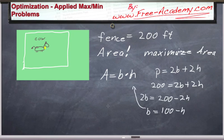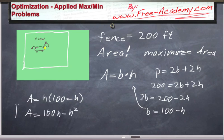We can substitute that into our equation for the area, and we get area is equal to h times 100 minus h. Because we substituted the base in. We can distribute that through, and we get area is equal to 100h minus h squared.